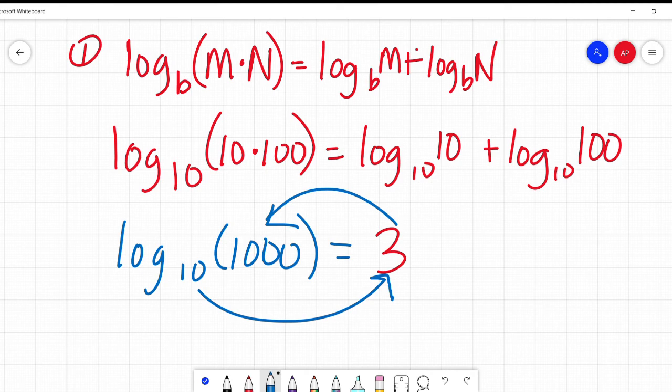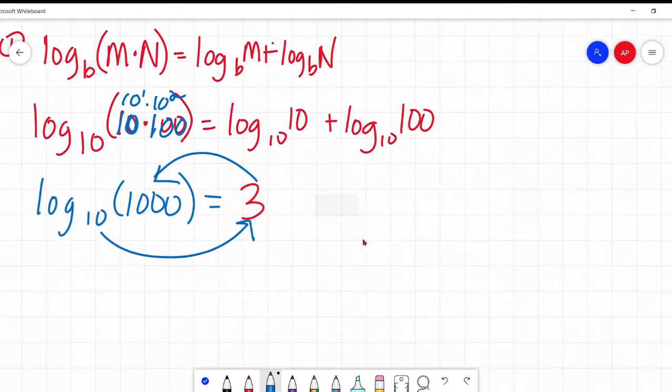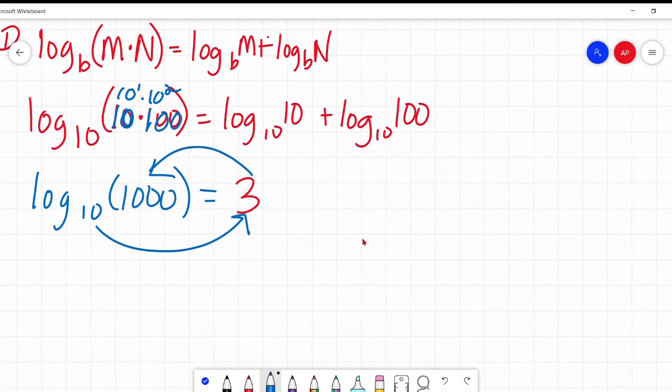Now if you look inside here, interesting little thing to note. This is just 10, which is the same as 10 to the power of 1, and 100 is the same as 10 squared. If you remember from our videos of exponents, 10 to the power of 1 times 10 to the power of 2, we would add the exponents, making it 10 to the power of 3. Keep that in mind. That's part of why this rule is true.